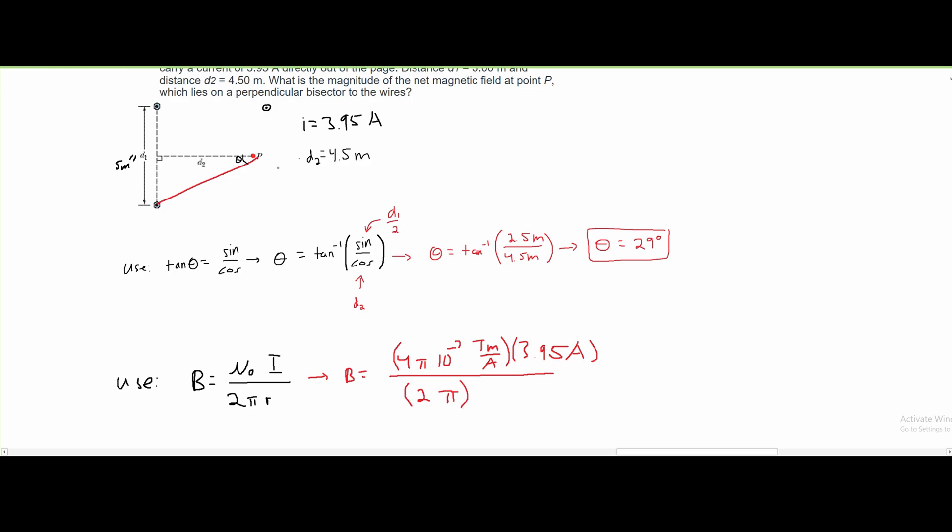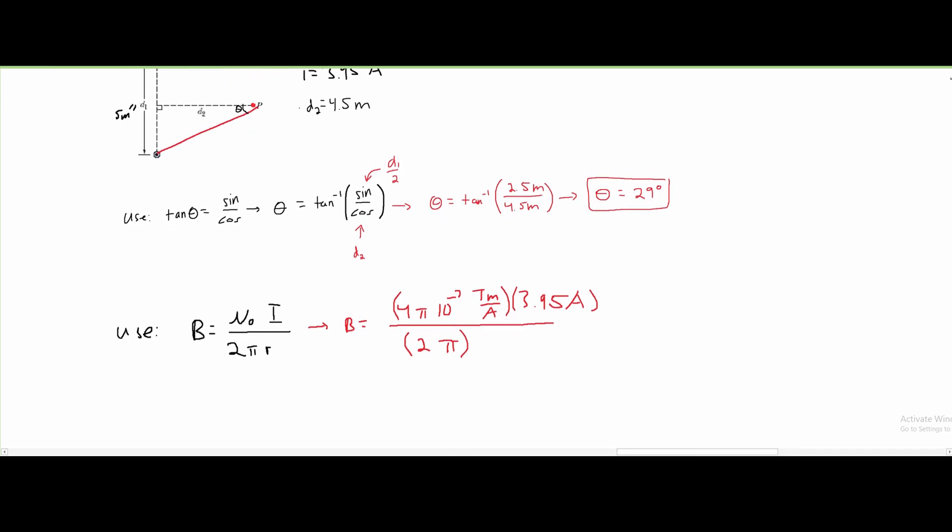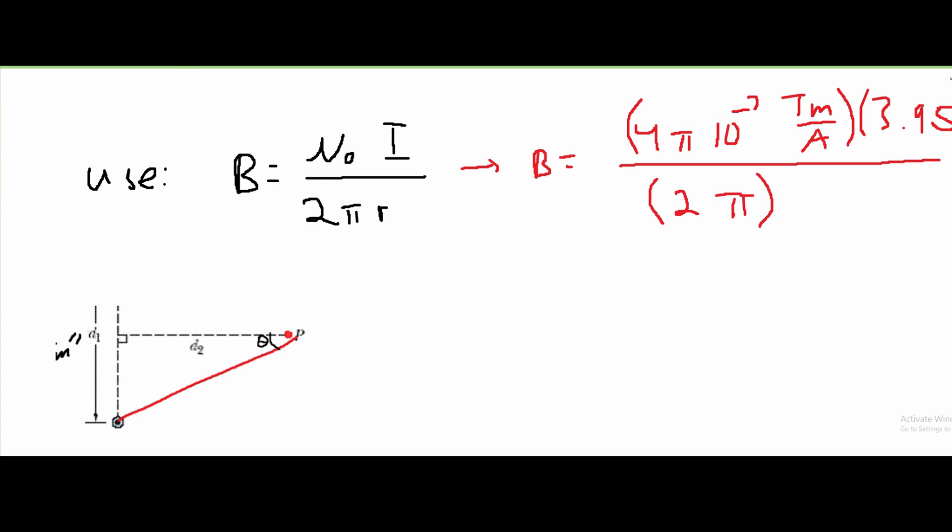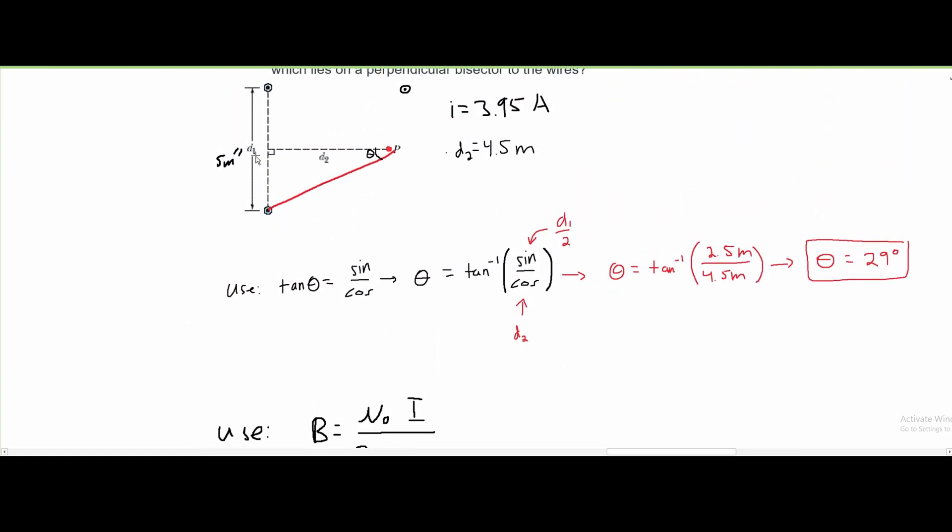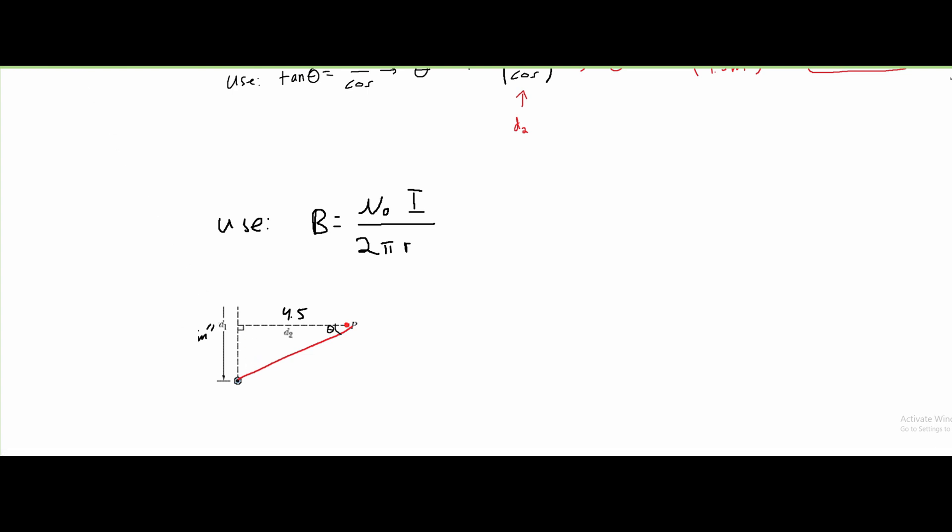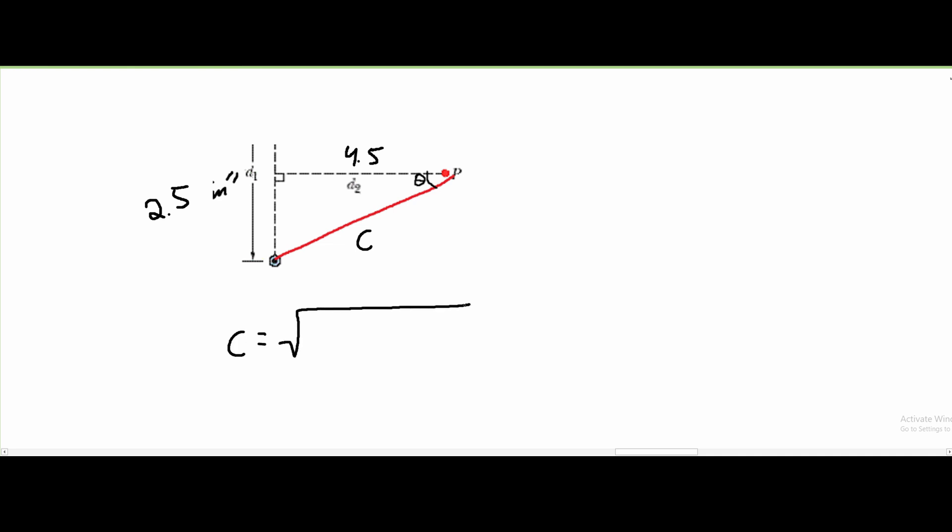Then we have 2π and r. Now our r is not going to be d1 or d2. What our r is going to be is the Pythagorean theorem of this. Our d2 is 4.5 and our d1 is 5, but we only are taking half of it, so 2.5. We need to find this value c. The Pythagorean theorem gives us c = √(2.5² + 4.5²), which is approximately 5.15 meters.